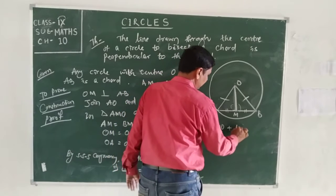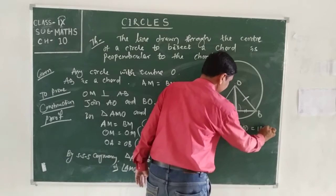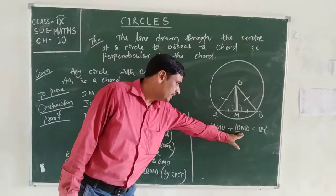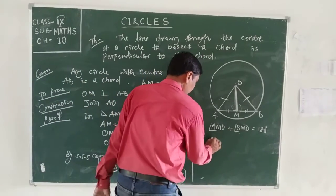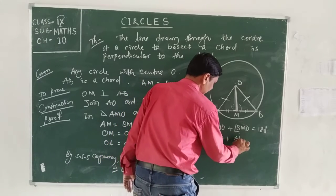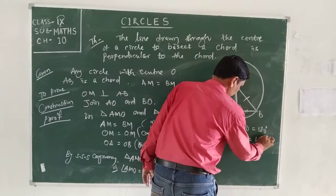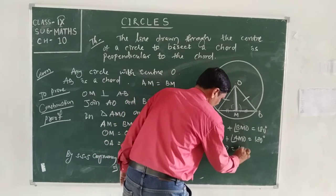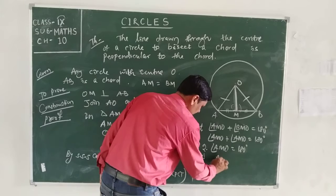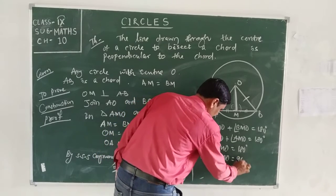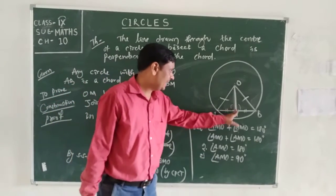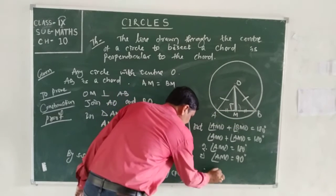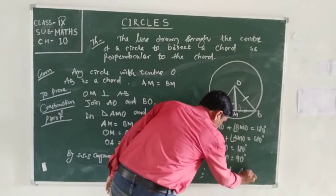Angle OMA plus angle OMB equals 180 degrees (angles on a straight line). Since both angles are equal, we substitute: angle OMB plus angle OMB equals 180 degrees. So two times angle OMB equals 180 degrees, which implies angle OMB equals 90 degrees.